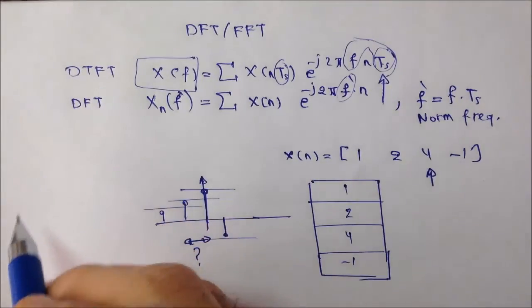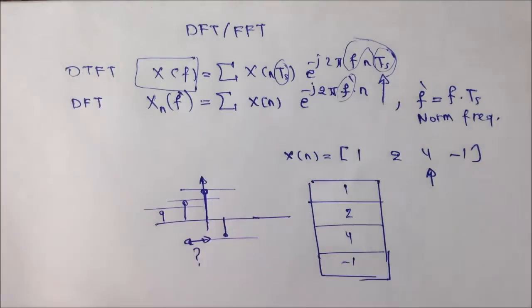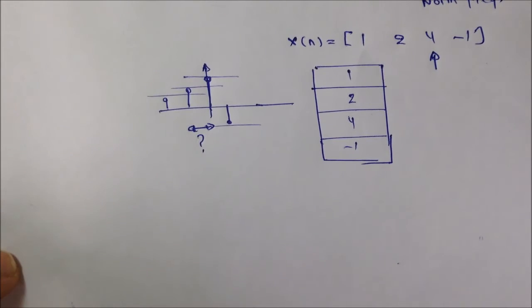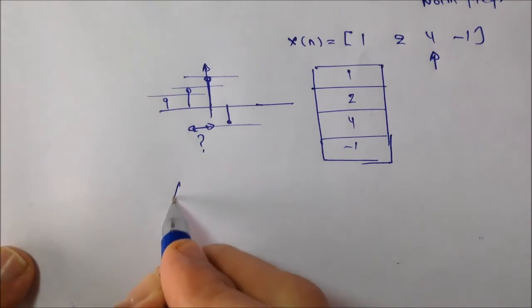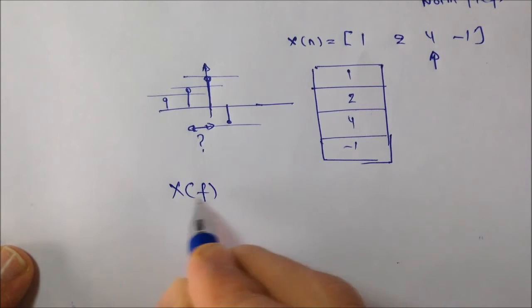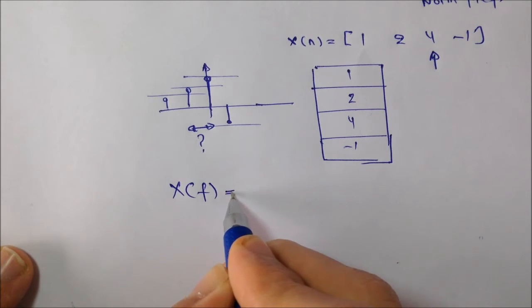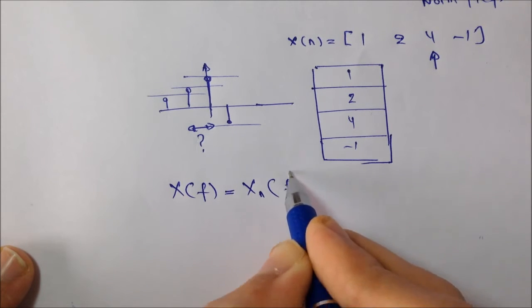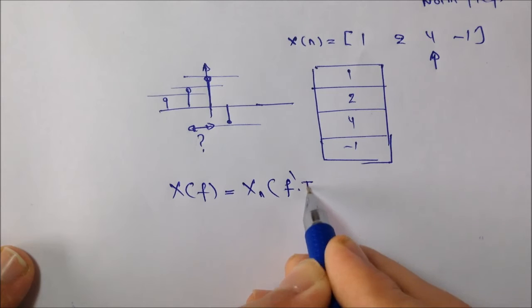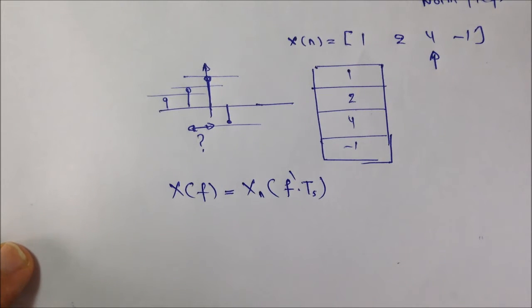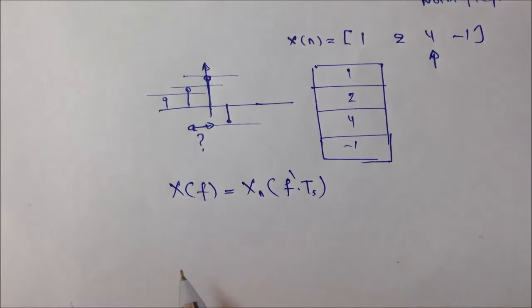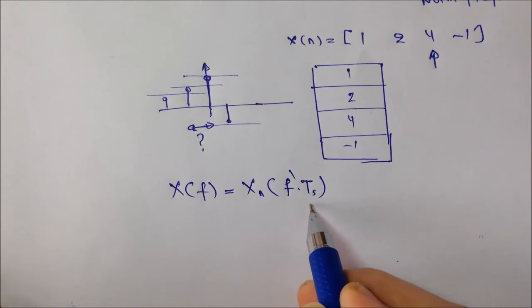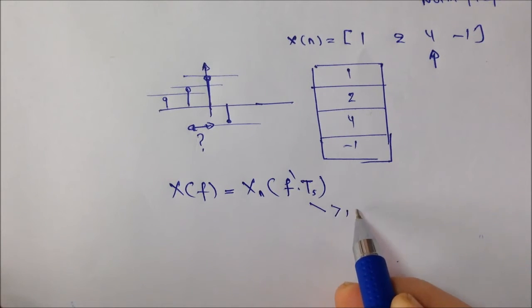Now, what's the advantage of the DFT and what's its relation with the DTFT? Well, obviously, the mathematical relation between them is given by X(f), which is the spectrum given by the DTFT, equals to X normalized of F prime times Ts. So, basically, it's a relation of compression or contraction or expansion depends on the value of Ts, which is greater or less than 1.